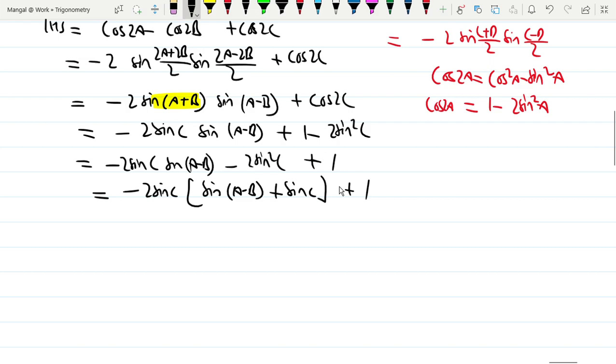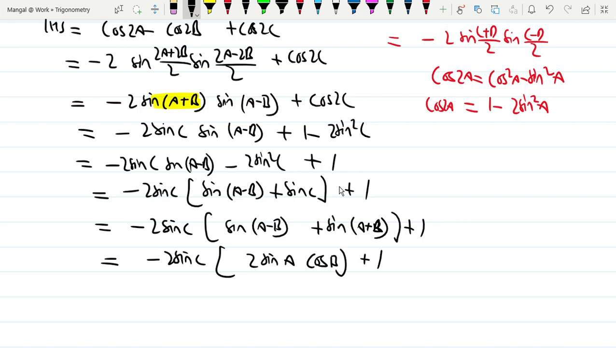So -2sin(c)[sin(a-b) + sin(a+b)] + 1. Now we have the sum of two sine terms: sin(a-b) + sin(a+b). Using the sine sum formula, this becomes 2sin(a)cos(b).